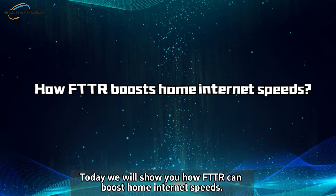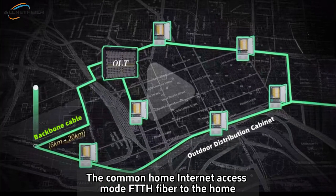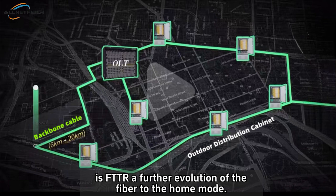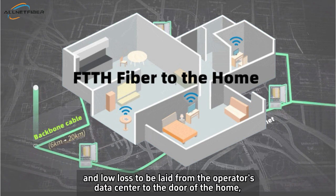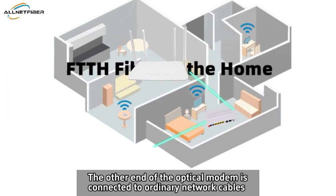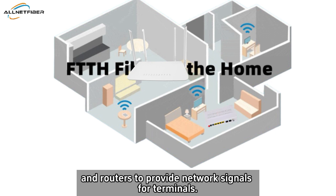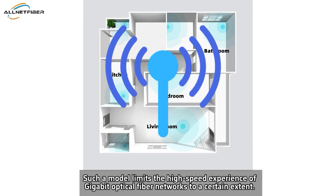Today we will show you how FTTR can boost home internet speeds. The common home internet access mode, FTTH (fiber to the home), is the predecessor of FTTR — a further evolution of the fiber-to-the-home mode. Fiber to the home uses optical fiber with high transmission efficiency and low loss, laid from the operator's data center to the door of the home, where the optical modem is inserted. The other end of the optical modem is connected to ordinary network cables and routers to provide network signals for terminals. Such a model limits the high-speed experience of gigabit optical fiber networks to a certain extent.